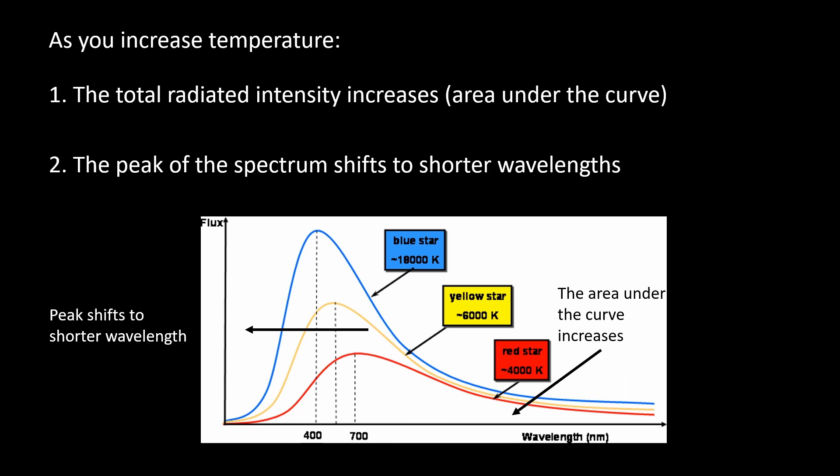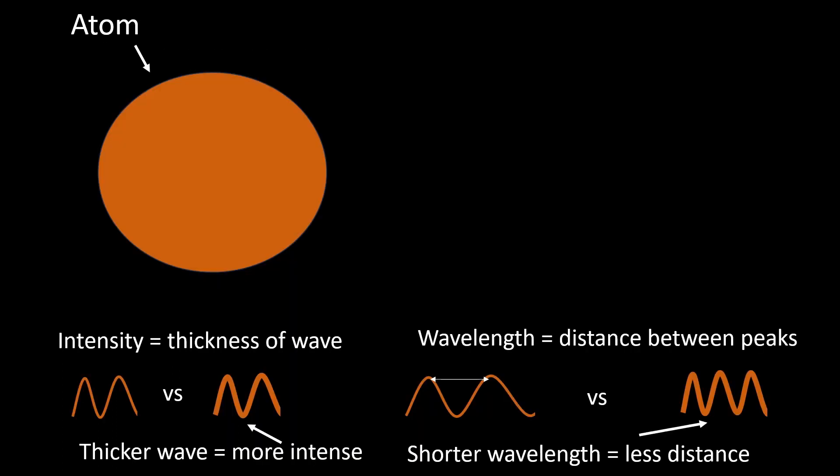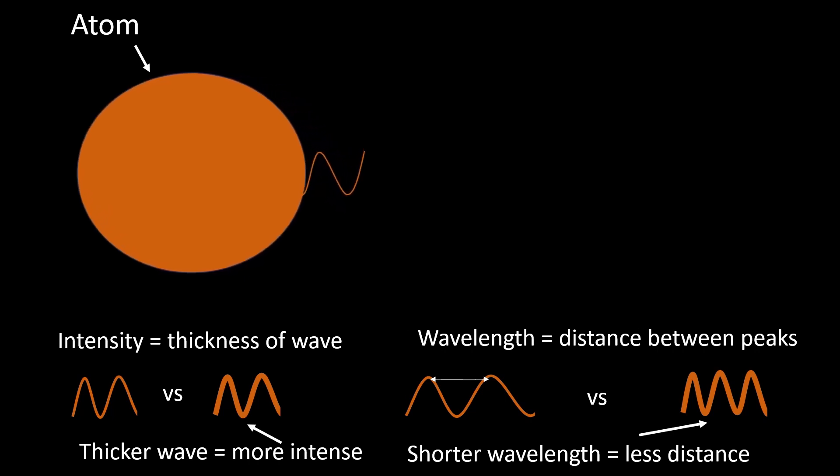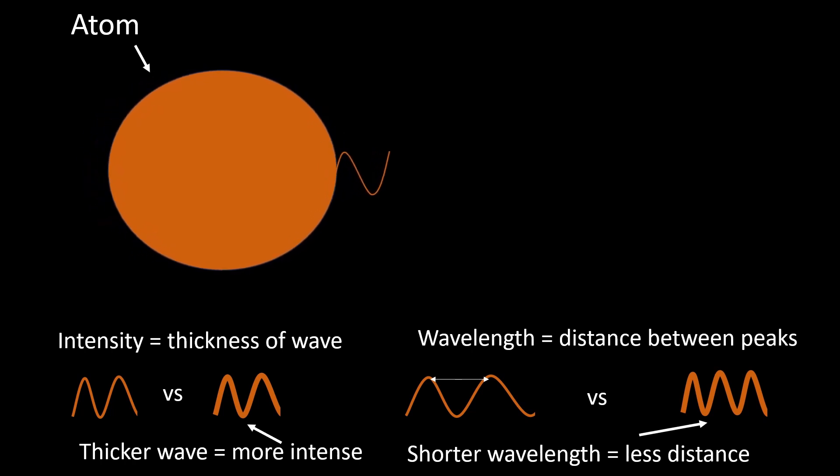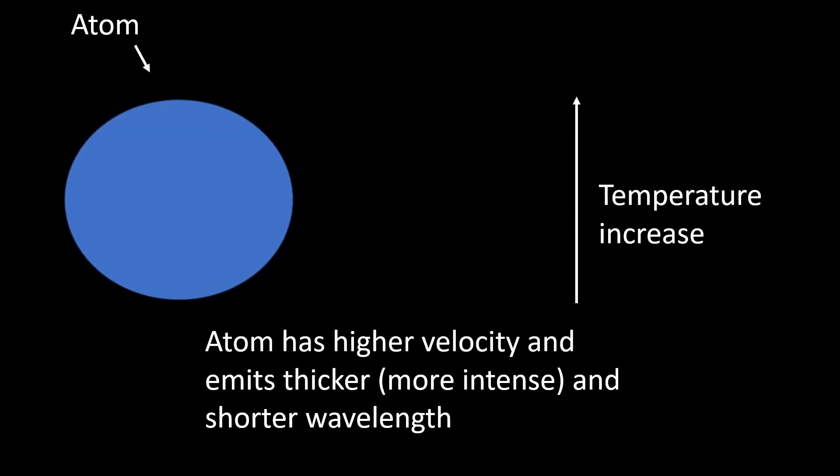To grasp this concept from a chemistry standpoint, picture atoms moving at certain velocities due to their thermal energy. These atoms emit specific wavelengths of light based on their velocity, and this is shown by the distance between wave peaks. They also emit differing amounts or intensities of light shown by the thickness of the wave. When temperature rises, atoms move faster, emitting shorter wavelengths and more intense light or thicker waves.